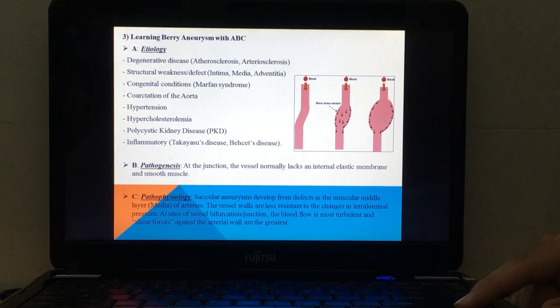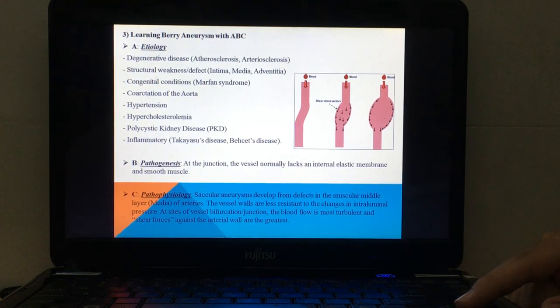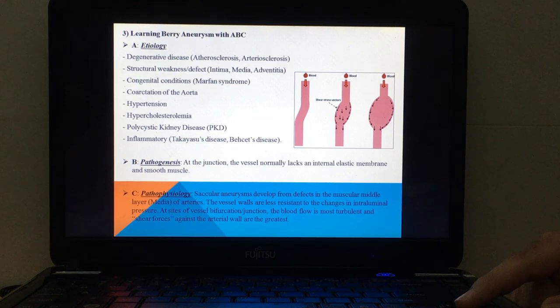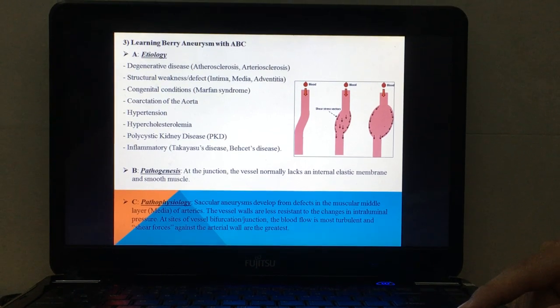Saccular aneurysms develop from defects in the muscular middle layer, we can call it the media of arteries. The vessel walls are less resistant to the changes in intraluminal pressure at sites of vessel bifurcation or junction. The blood flow is most turbulent and shear forces against the arterial wall are the greatest.